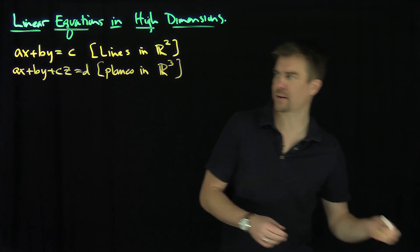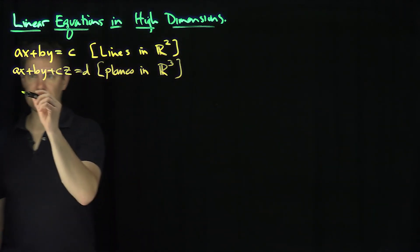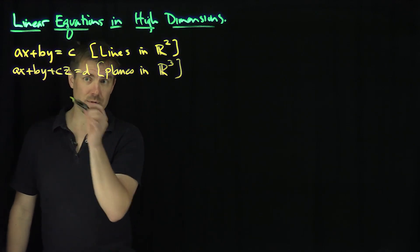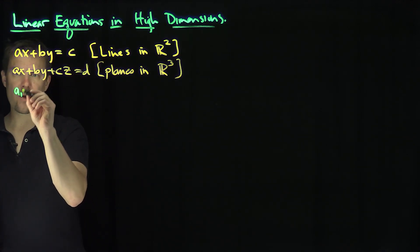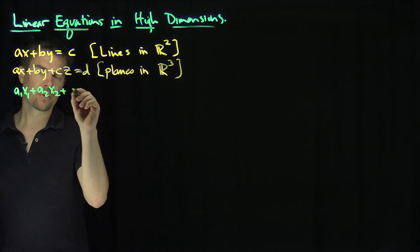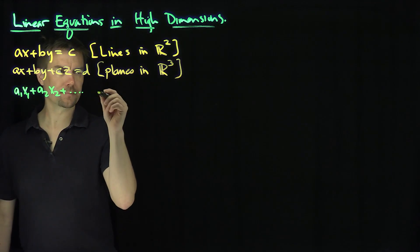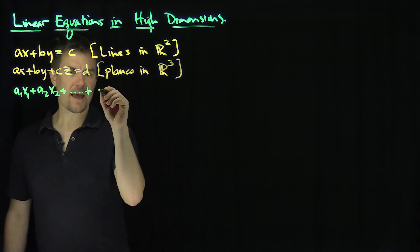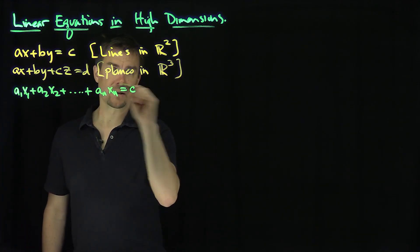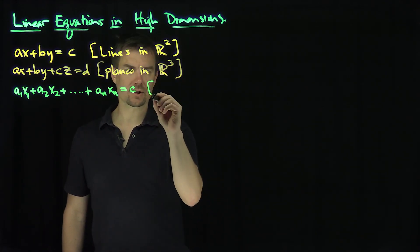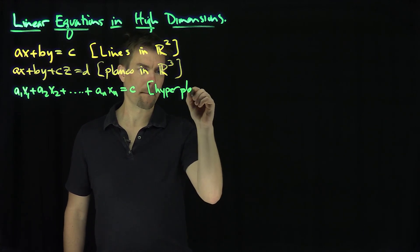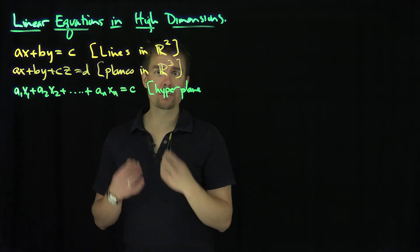We can extend these ideas and get equations that look like this. I can't use the letters a, b, c, d anymore, so I have to enumerate them with indices. I'm going to say a1x1 plus a2x2 plus all the way down to anxn is equal to some constant c — this is called a hyperplane.